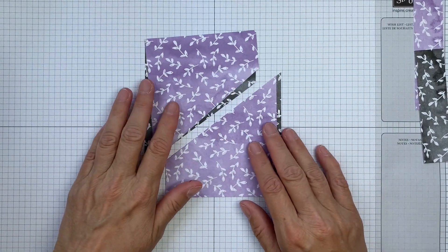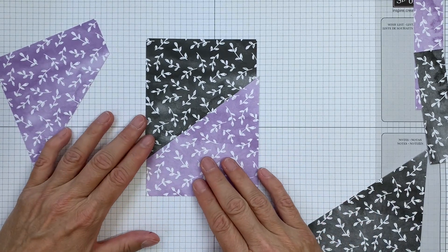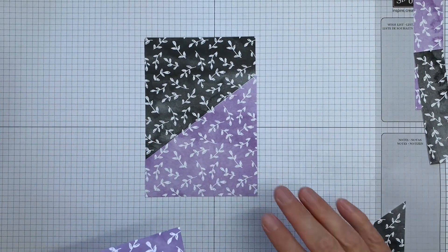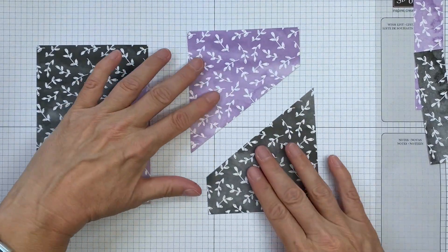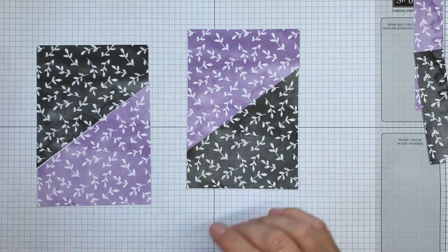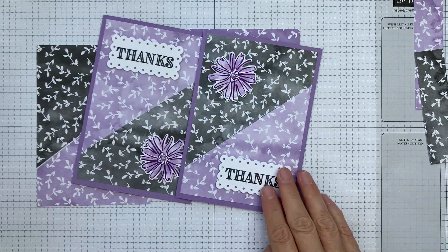So those are our card fronts but what we can do is pop those two together and they line up beautifully. And we can put those two together and again they line up beautifully. And that's exactly what I've done for these two cards here.